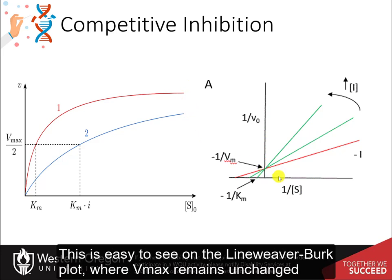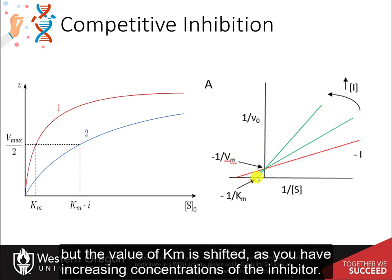This is easy to see on the Lineweaver-Burk plot, where Vmax remains unchanged but the value of KM is shifted as you have increasing concentrations of the inhibitor.